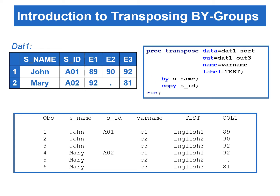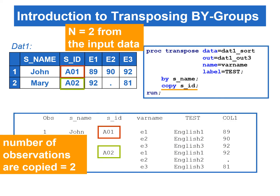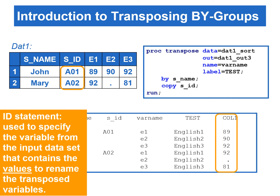In this example, we add the COPY statement. We can use the COPY statement to copy one or more variables from the input data set directly to the transposed data set. Here, we use the COPY statement to copy the S_ID variable from the input data set. Since there are 2 observations from the input data set, the number of observations that will be copied will be 2 as well. SAS pads missing values to the rest of the observations.